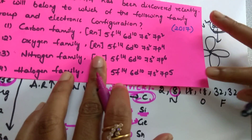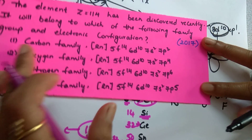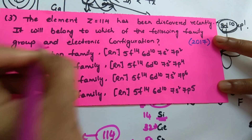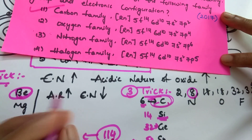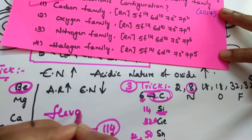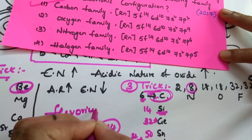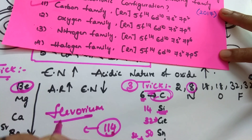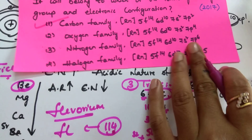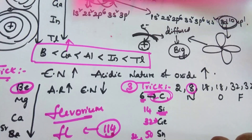So the correct answer is the first option - carbon family. The element is flerovium, and its symbol is Fl.